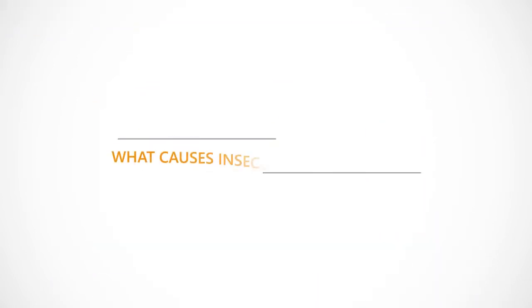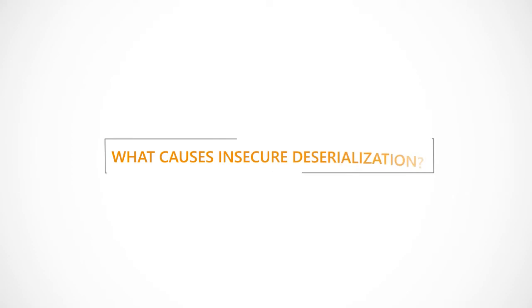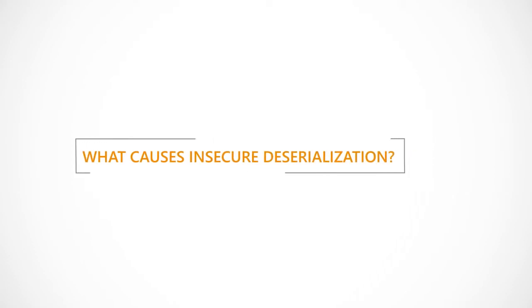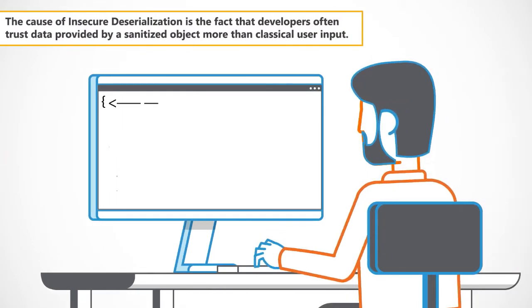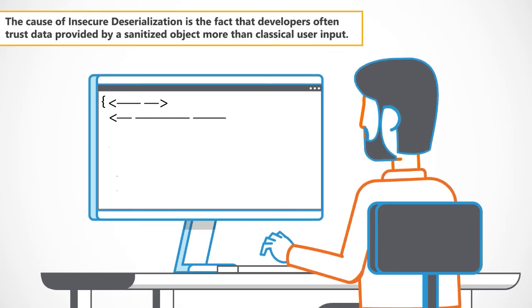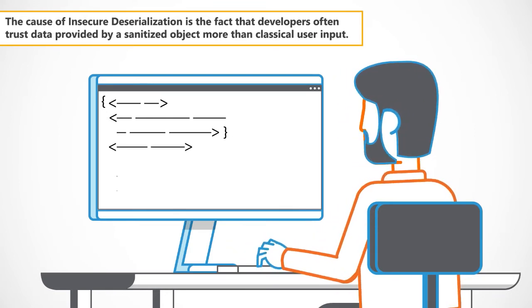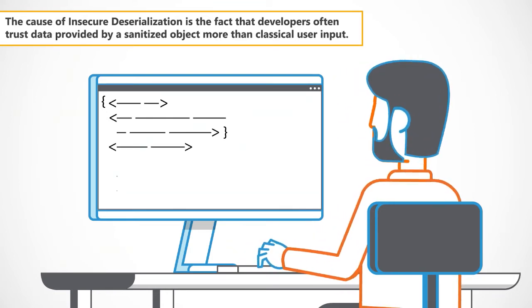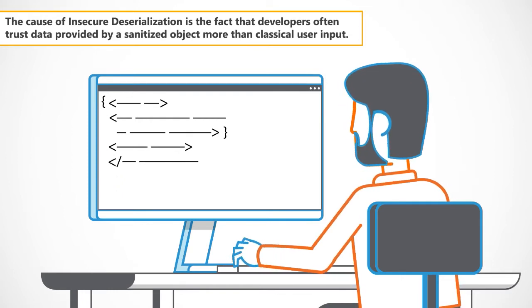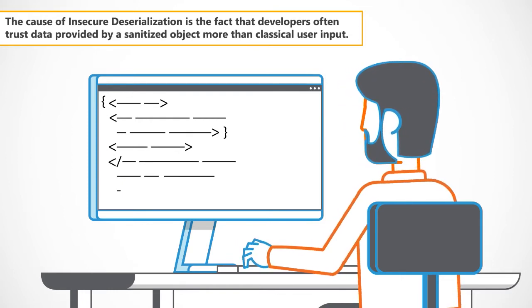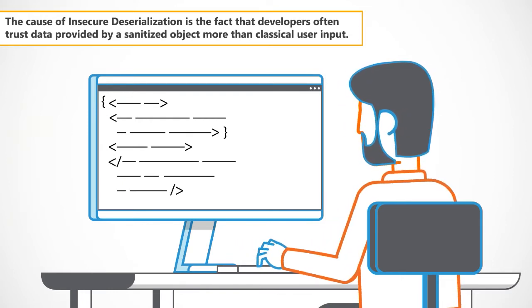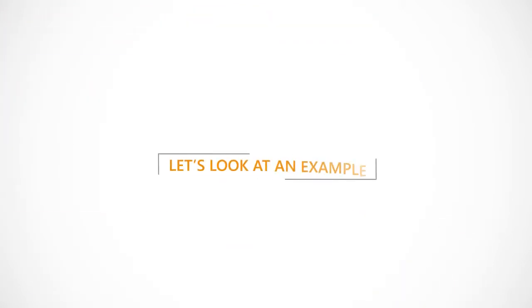What causes Insecure Deserialisation? The cause is the fact that developers often trust data provided by a sanitised object more than classical user input. To understand Insecure Deserialisation vulnerabilities, let's look at an example.